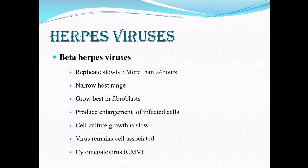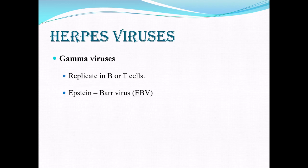The beta herpesviruses have slightly slower replication compared to alpha herpesviruses, and a narrow range of cells they will infect. They grow well in fibroblasts, enlarge the cells in which they are growing, and in tissue culture they remain cell-associated — the virus is only active while the cell is there. The example is cytomegalovirus. The gamma viruses replicate only in B cells or T cells, and the example is Epstein-Barr virus.